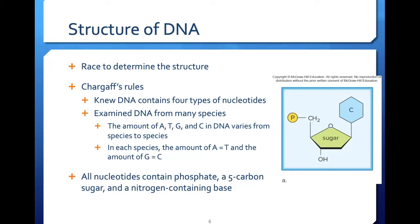Chargaff's data suggests that DNA has a structure in which adenine can only pair with thymine and guanine can only pair with cytosine. His data also showed that DNA can be variable, which is an important requirement for genetic material. The amount of A, T, G, and C in DNA varies from species to species. Today we know that the paired bases may occur in any order — for example, a chromosome containing 140 million base pairs can have 4 to the 140 million possible nucleotide pair sequences, which is an overwhelming degree of variability.